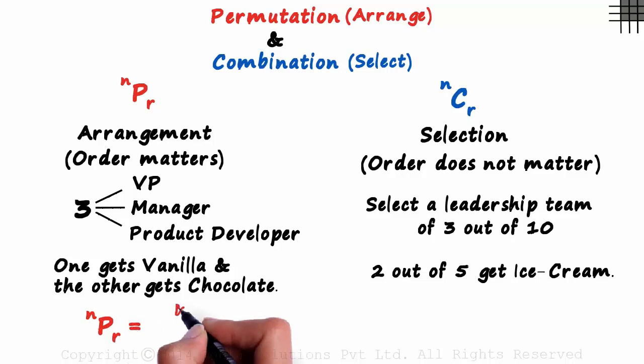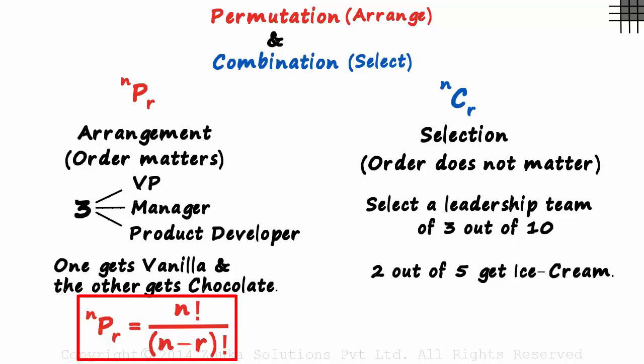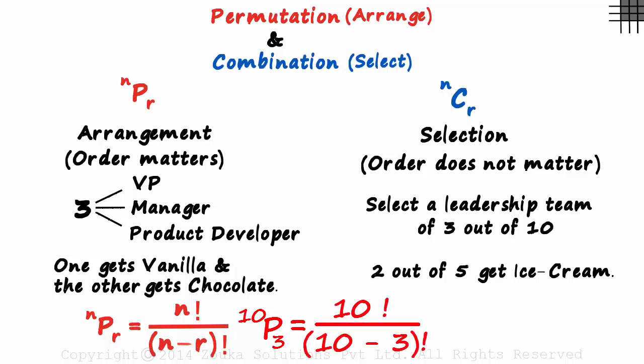So this equals N factorial divided by N minus R factorial. Yes, that's the formula. If we have to arrange three people out of 10, it will equal 10 factorial divided by 10 minus 3 factorial.